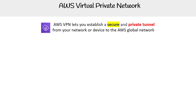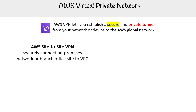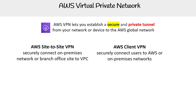AWS VPN lets you establish a secure and private tunnel from your network or device to the AWS global network. This is a slide I used in the Cloud Practitioner, so not super exciting, but it does point out the two things we need to learn about. The first is the AWS Site-to-Site VPN, which securely connects on-premise networks or branch office sites to a VPC, and the AWS Client VPN, which securely connects users to AWS or on-premise networks.